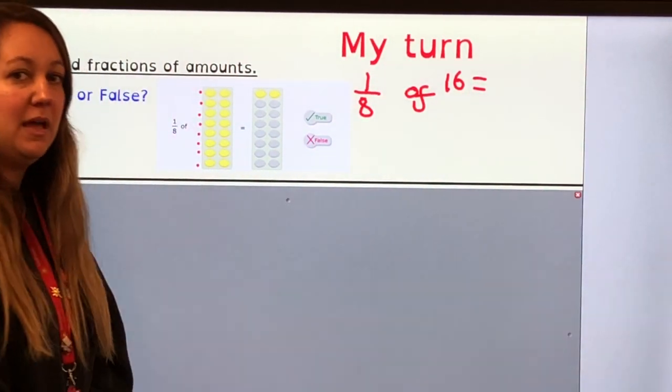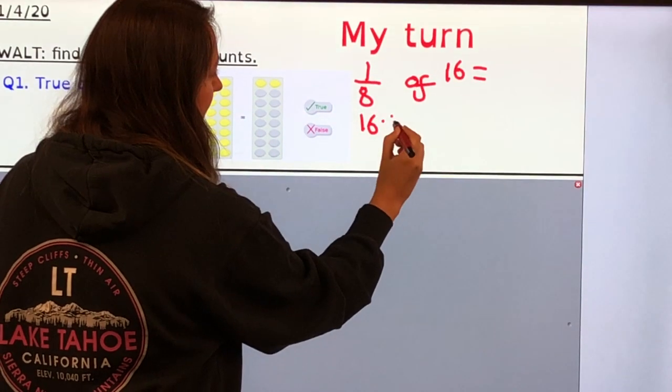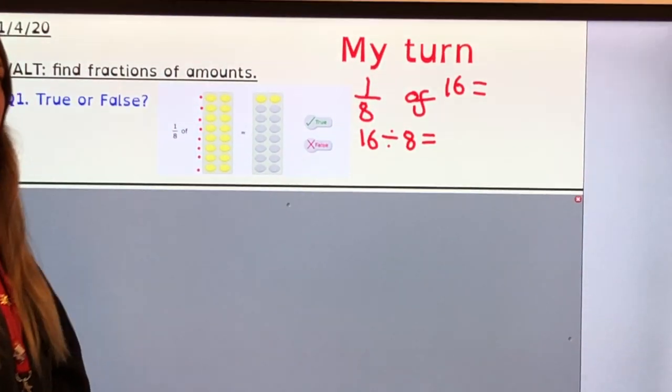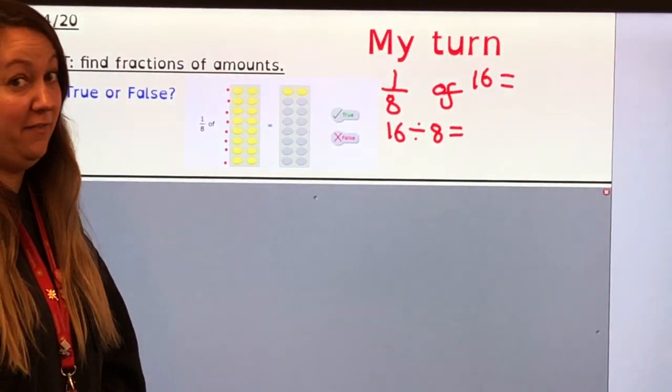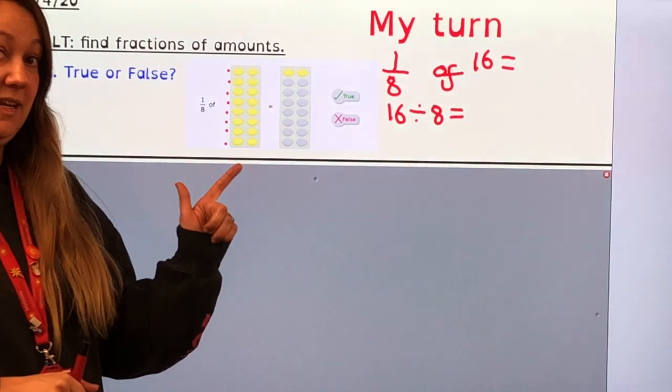Now remember to do this we do the whole divided by the denominator. 16 divided by 8, I could half it, half it, half it again or I can count in 8s. 8, 16, 2.